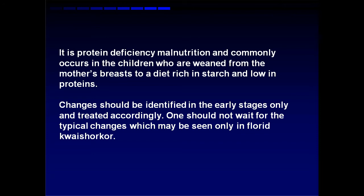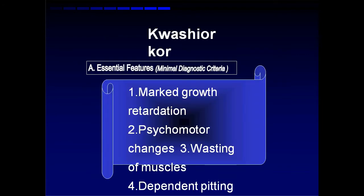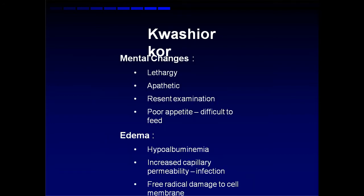Kwashiorkor commonly occurs in children weaned from the mother's breast to a diet rich in starch but low in proteins. Changes should be identified in early stages and treated accordingly — we should not wait for the typical changes of florid Kwashiorkor because that will be too late. Essential features include marked growth retardation; the weight is around 60 to 80 percent. These babies look plump due to edema but are malnourished. There are also psychomotor changes, muscle wasting, and dependent pitting edema.